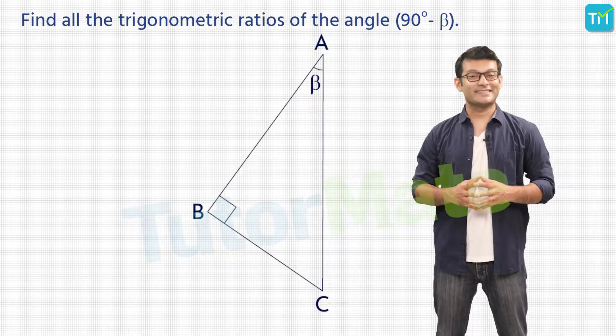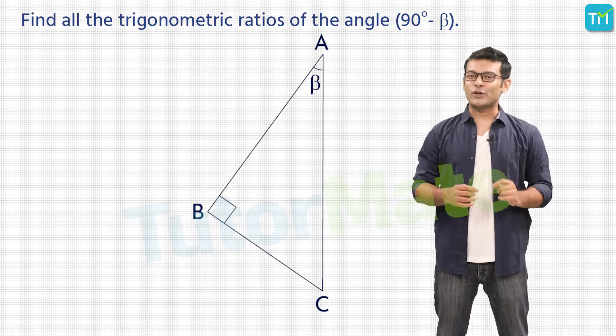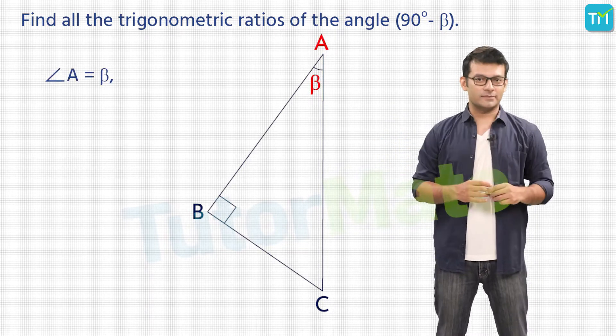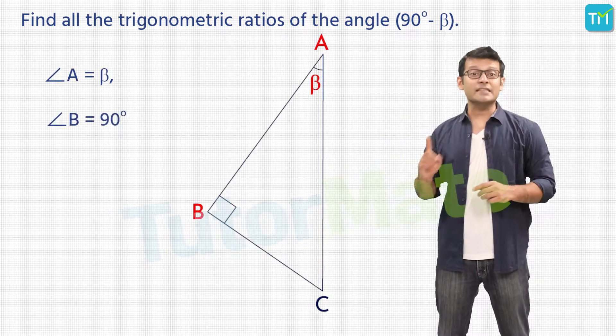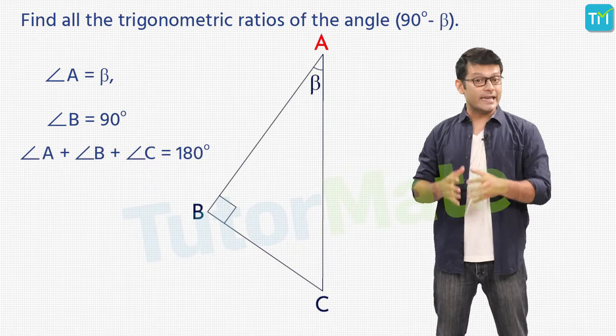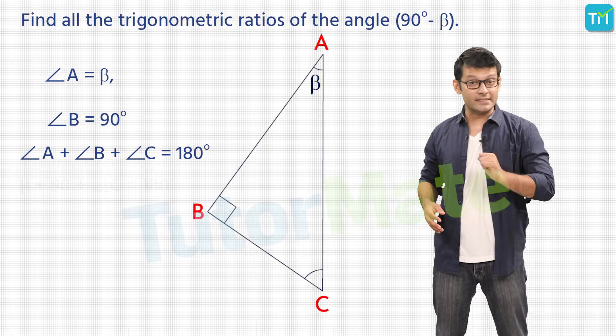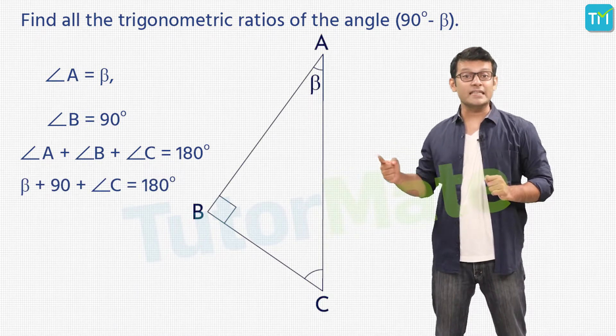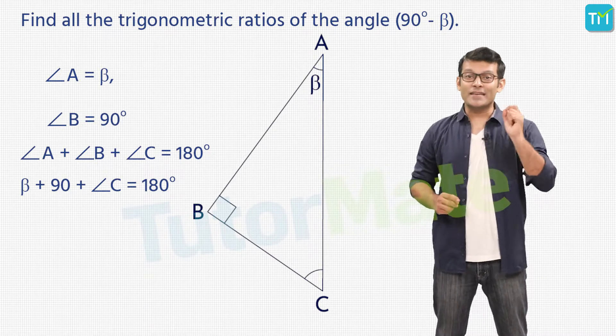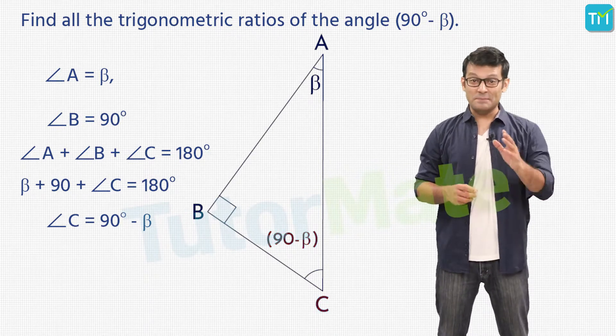Sounds tricky, doesn't it? Well, it isn't that difficult. Just stay with me on this and we'll solve it one step at a time. So here we are given angle A as β, and angle B is 90 degrees. Now, by angle sum property of this triangle, we will have angle A plus angle B plus angle C equal to 180 degrees. That is, β + 90 + angle C is equal to 180 degrees. Taking β and 90 to the other side, we get angle C as (90° - β).